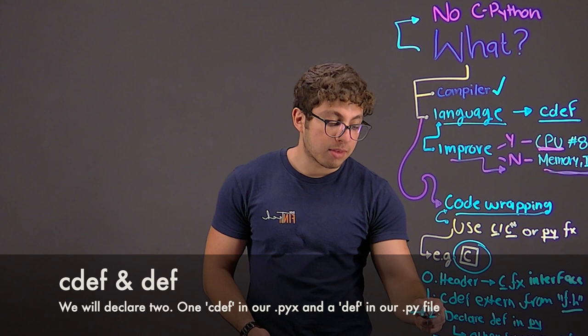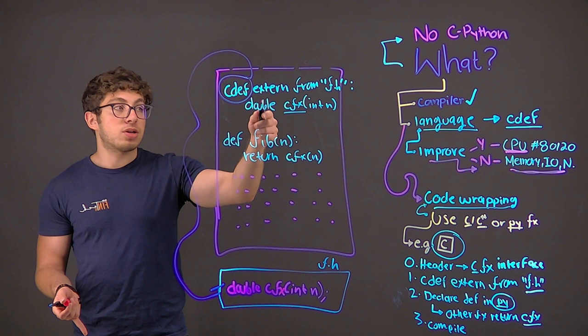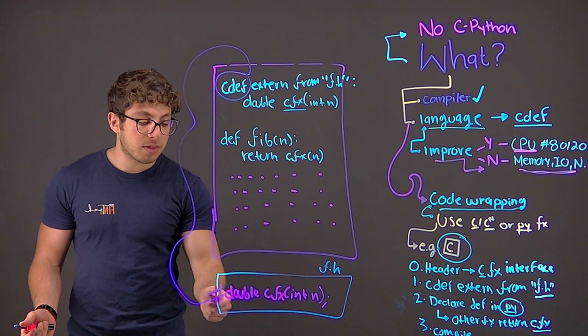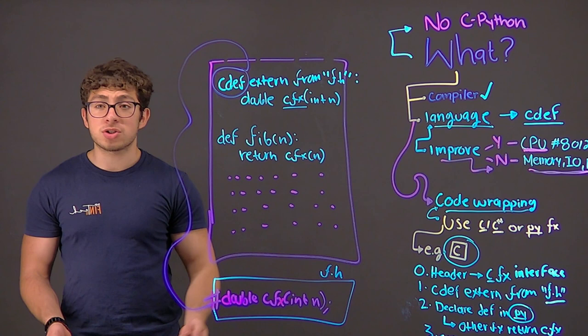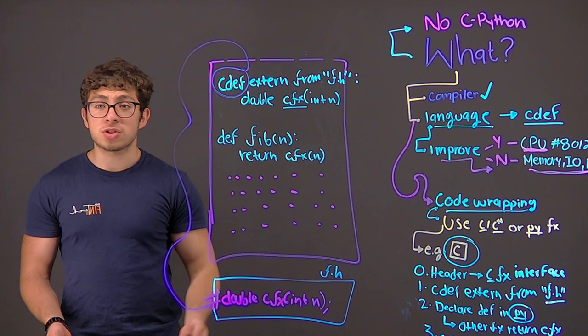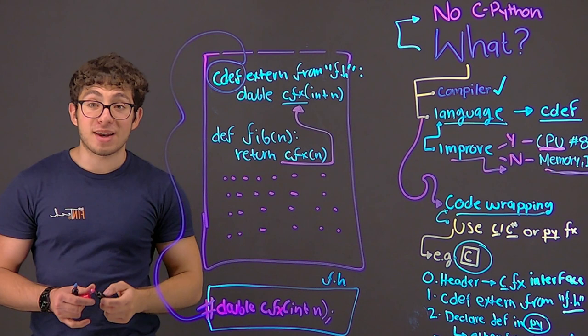After that, we just have to declare another function in Python. This is basically the process. We have cdev, a Scython defined function externing from the file.h, the header file from C, that is regarding this function. Double CDFX integer n. This means that this function will return a double in C programming. We just take it, apply it to Scython, then call our own Python function, returning this function.